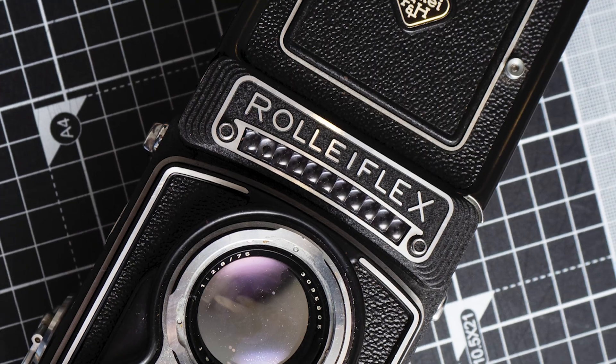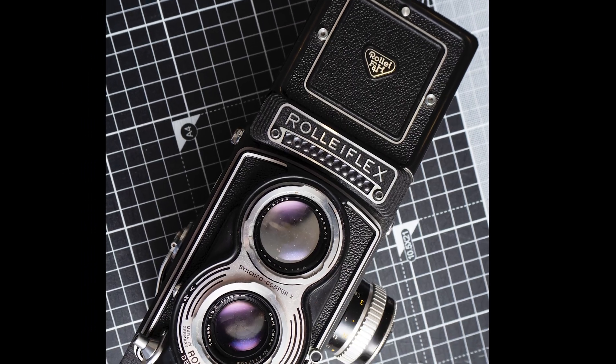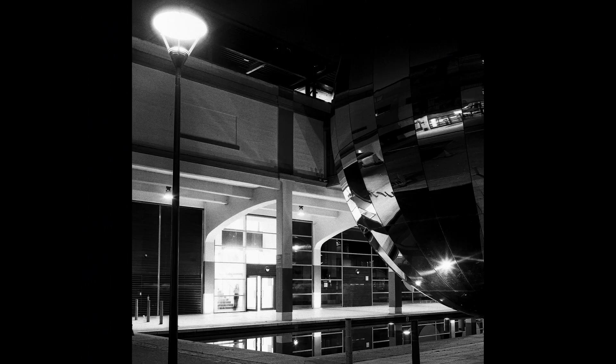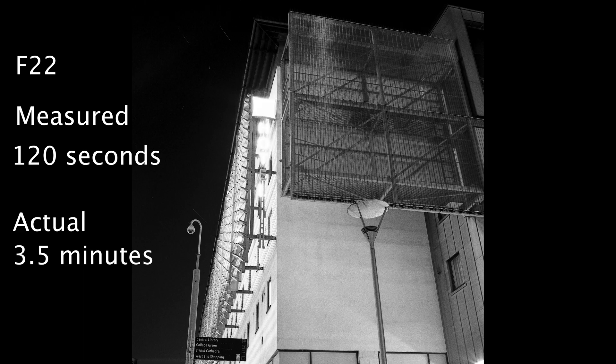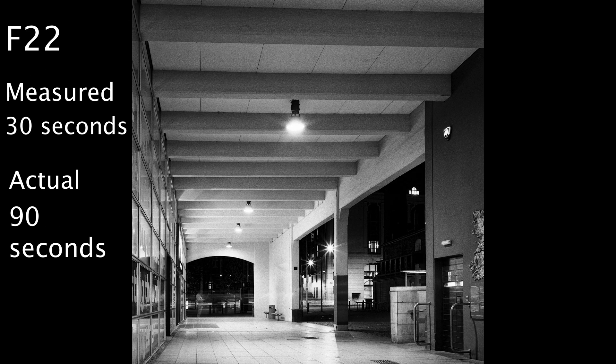I went out at night to take some photographs in Bristol with my Rolleiflex, tripod, and a cable release. Here's a shot where the meter reading is 60 seconds at f22. Looking at the table, you can see I had to increase this to three and a half minutes. Here are some photos showing both the measured light reading and the actual exposure applied.